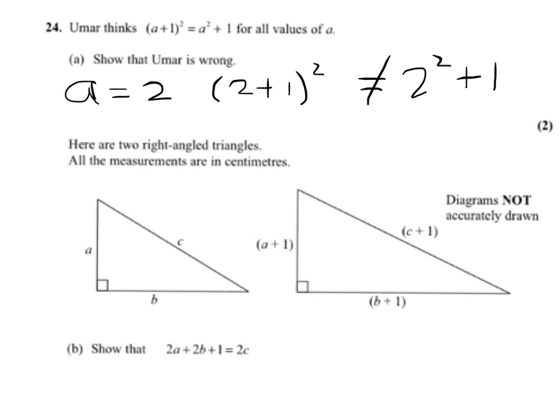I'll show you why. (2+1)² is 3², and 3² is not equal to 4 + 1.